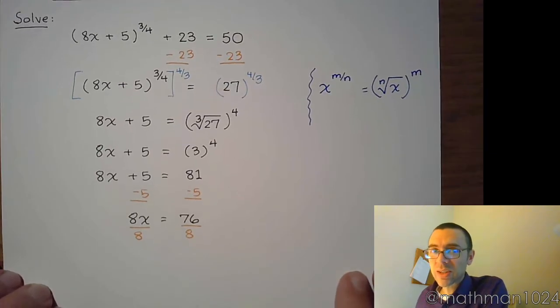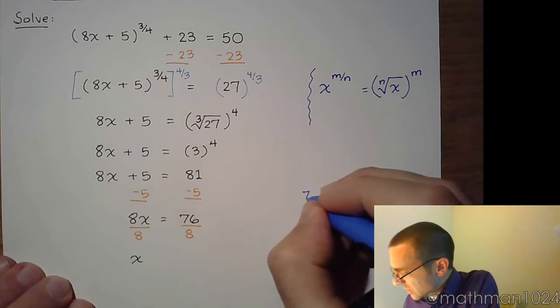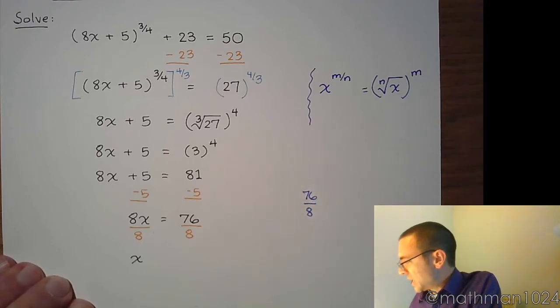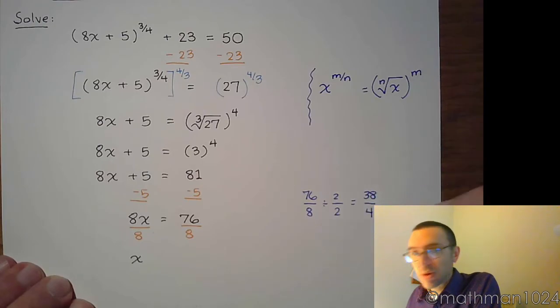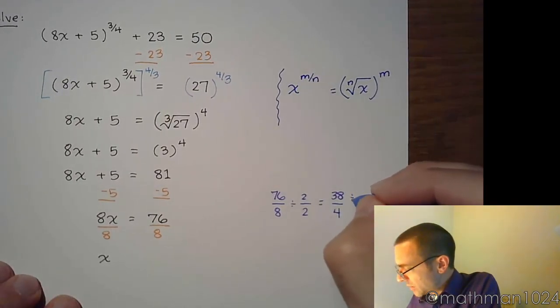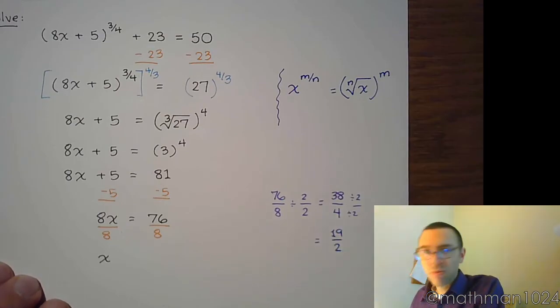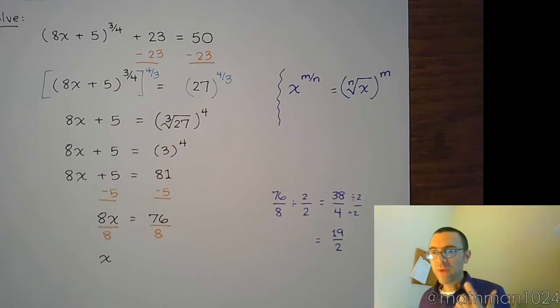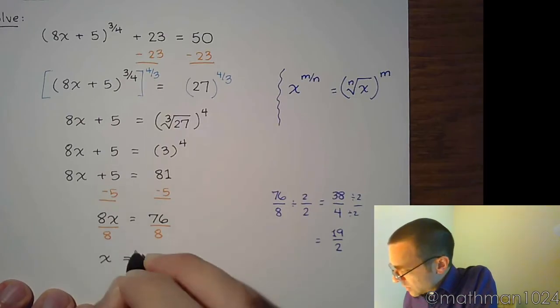Now, 8 does not go into 76 evenly, but we can reduce this. Again, you can take this off to the side to see what's going to happen here. 76 divided by 8. You can at least reduce these guys by a factor of 2 because they're both even. That gives us 38 over 4. And we can reduce these guys again by another common factor of 2, and that gives us 19 over 2. So if you didn't see that 4 was the greatest common factor, do it one piece at a time and reduce to get 19 halves.